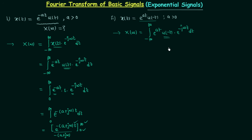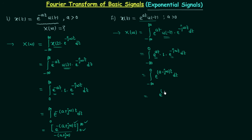u(minus t) is equal to 0 from 0 to infinity and equal to 1 from minus infinity to 0. So we can write the integration as minus infinity to 0: e power at multiplied by 1, times e power minus j omega t, dt. Combining the two exponentials, we have integration minus infinity to 0 of e power (a minus j omega) t, dt.